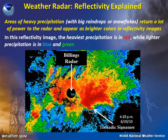In the reflectivity image shown here, the heaviest precipitation is in red while lighter precipitation is in blue and green. The location of the Billings Doppler weather radar is indicated by the small blue letters KBLX inside the black circular region.